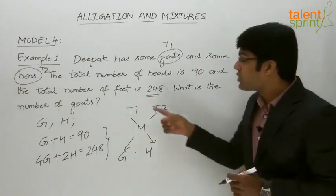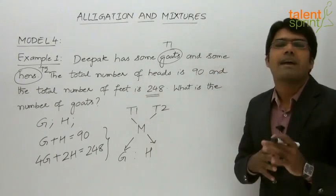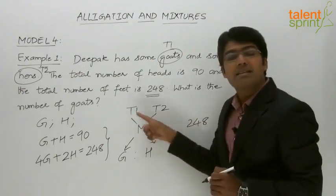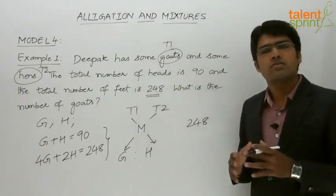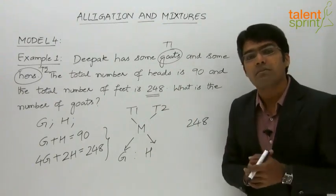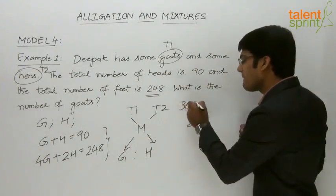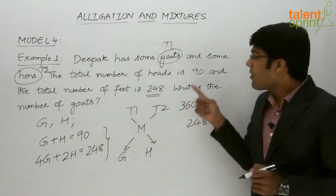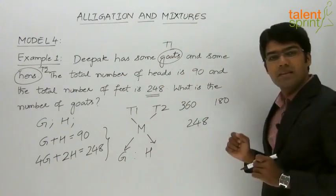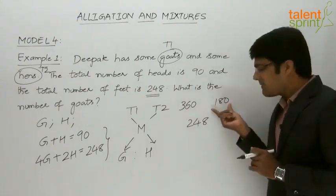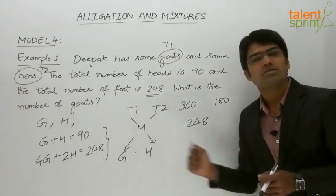The mixture value m is 248. For t1, assume all 90 animals are goats: 90 into 4 equals 360. For t2, assume all 90 are hens: 90 into 2 equals 180. So t1 is 360 (feet for only goats), t2 is 180 (feet for only hens), and m is 248 (feet of the final mixture). Taking the cross differences of these values gives us the ratio g to h.